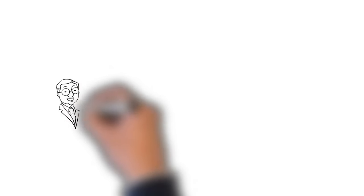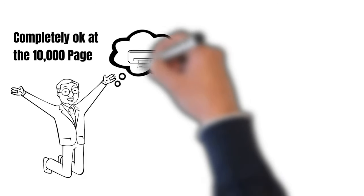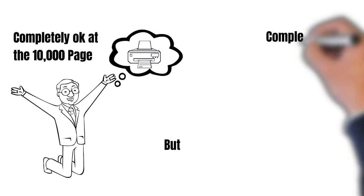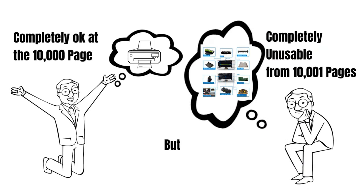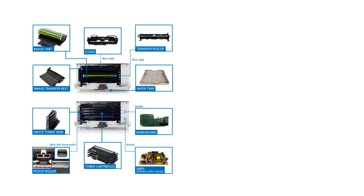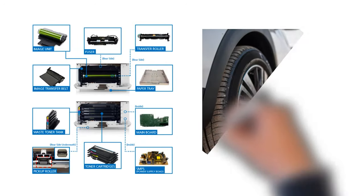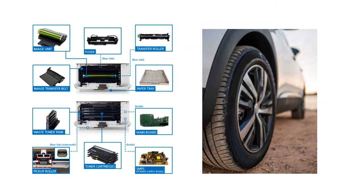But have you ever stopped to wonder, why parts that were functioning perfectly until the last page suddenly become completely unusable and demand immediate replacement? Is it truly necessary to replace them right at that moment? The wear and tear process on printer parts is the same as on car tires. So, to have a better understanding of this scenario, let's consider cases of using tires.